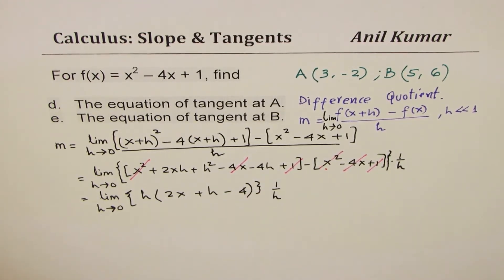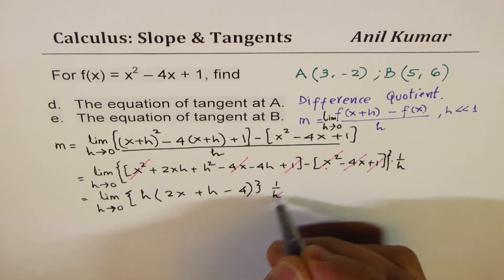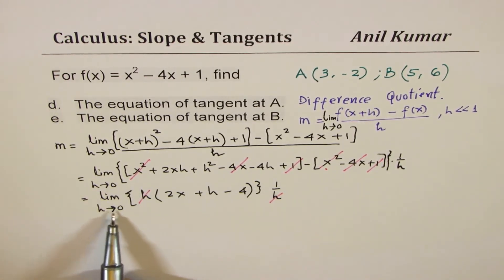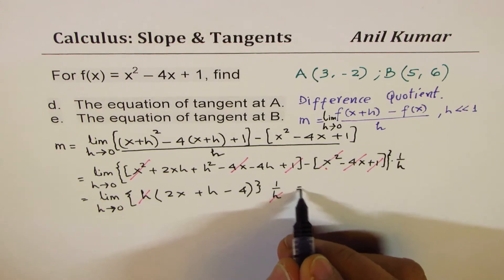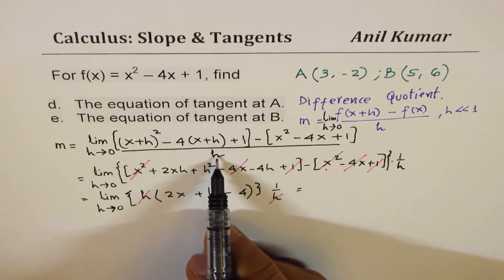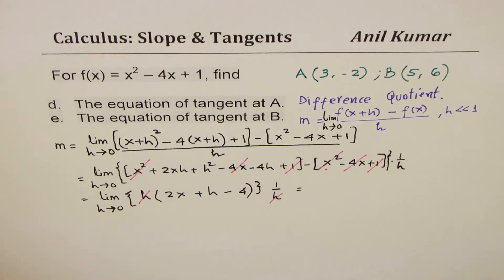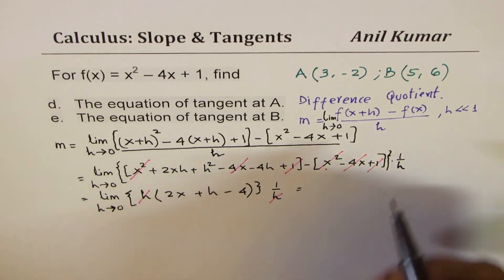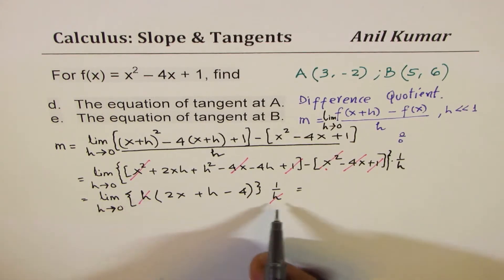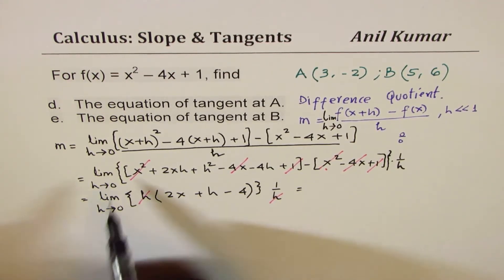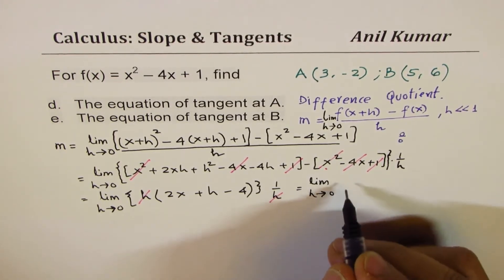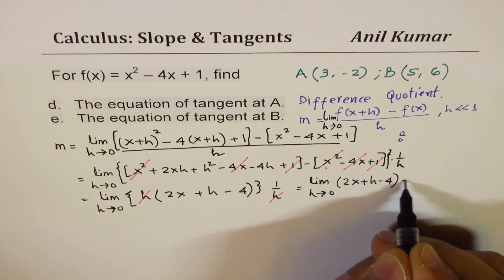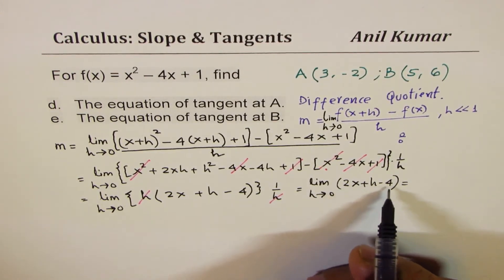The h terms cancel, so we can now substitute h = 0 without dividing by zero. Taking the limit as h approaches 0, the expression 2x + h - 4 becomes 2x - 4. So the slope of the tangent at any point x is m = 2x - 4.